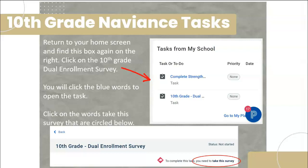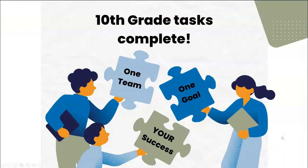The second activity you need to complete is the 10th Grade Dual Enrollment Survey. This is a one-question survey — it asks if you learned about dual enrollment during our presentation, which you did, so you will click yes. Click the words that say 10th Grade Dual Enrollment Survey and then click the words that say Take This Survey. Once you've completed that, you've done everything that we need per the county policy and the state law. If you have any questions, please feel free to reach out to your counselors or schedule a meeting with us — we are happy to go over anything in more detail or help answer any questions you might have. Thank you.